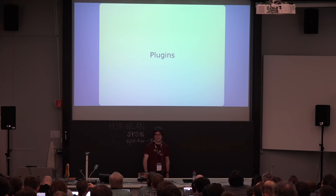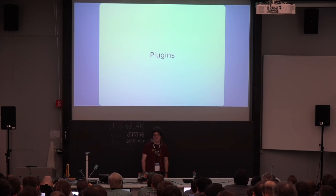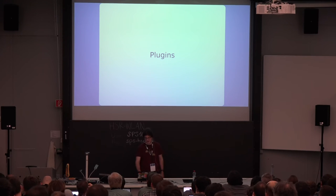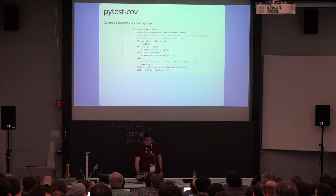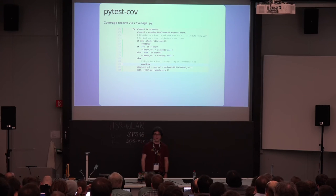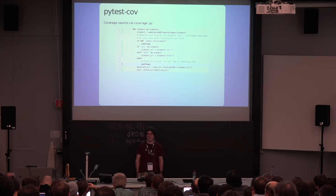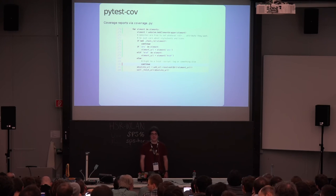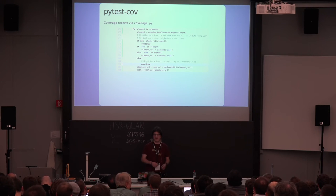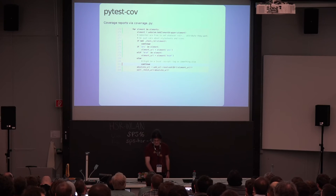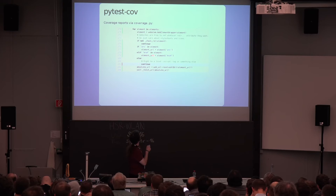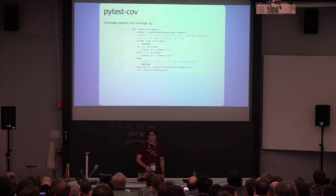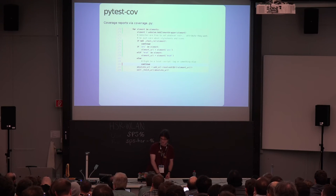A really nice topic that doesn't really exist for unittest.py in the same way is plugins. I want to show some plugins I use myself or find quite useful. One is pytest-cov, which uses coverage.py. Coverage.py measures what part of your code got executed, and can tell you — in this example — that the 'else' branch was never taken, so you're probably missing a test for that. Pytest-cov simply integrates this into PyTest nicely.